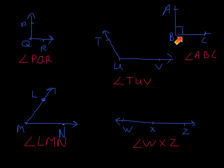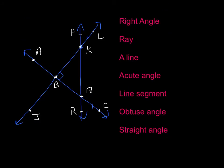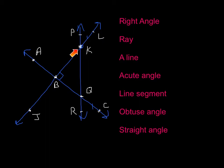Now we are going to identify specific angles, lines, or segments using a diagram. First, we need to find a right angle. We can see a box in the diagram, which means that angle is a right angle. Point B is the vertex — the middle — so we could say angle KBQ is a right angle. We write the angle symbol followed by K, B, Q.